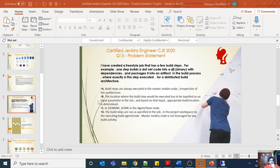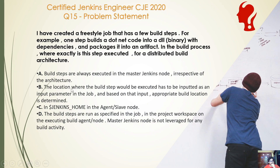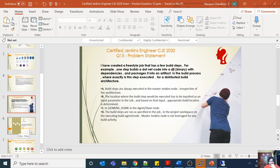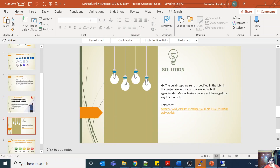So to recap: option A is incorrect, option B is incorrect — you don't define it as an input parameter, option C is not correct — it's not in Jenkins home. Option D is correct: the build steps are run as specified in the job, in the project workspace on the executing build agent or node. Master Jenkins node is not leveraged for any build activity.